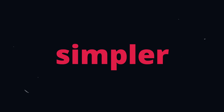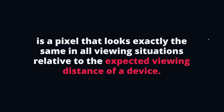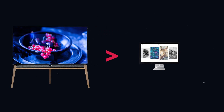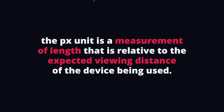In simpler terms, the reference pixel is a pixel that looks exactly the same in all viewing situations relative to the expected viewing distance of a device. That's why I got different physical measurements across devices — they all have different expected viewing distances. The box looked exactly the same relative to the size difference between the TV and monitor. This standard creates consistency across all devices regardless of size and pixels per inch. In summary, the pixel is relative to the expected viewing distance of the device. And practically speaking, 1 pixel is always the smallest width to make a line visible on the specific device.